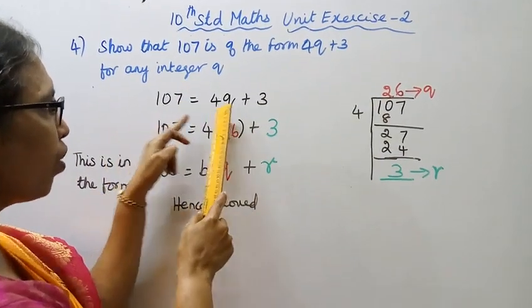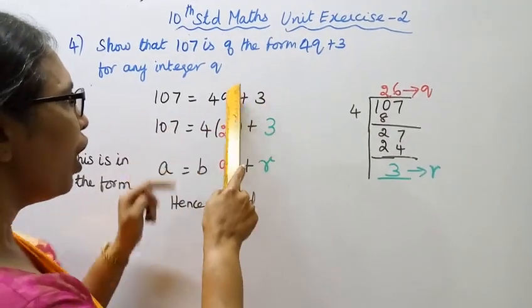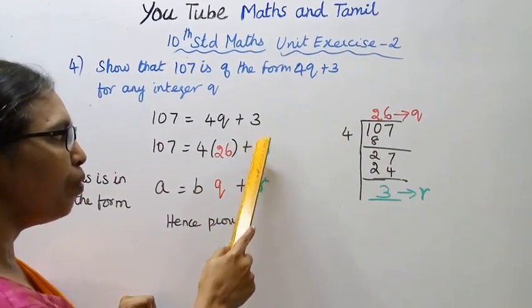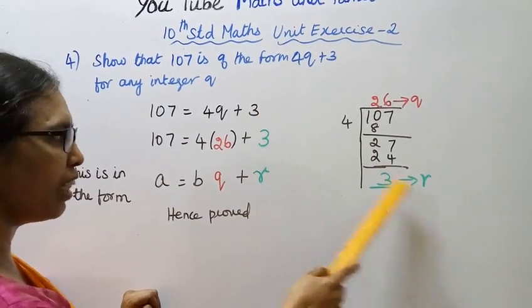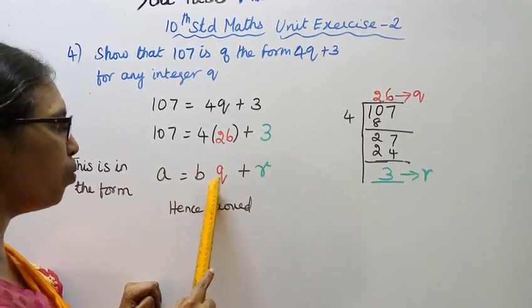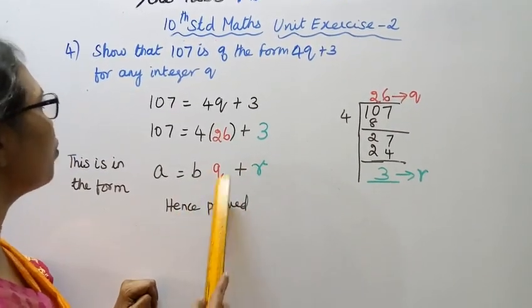107 equal to 4Q plus 3. So Q value, we get 26, remainder we get 3. So this is in the form A equal to BQ plus R. Hence proved.